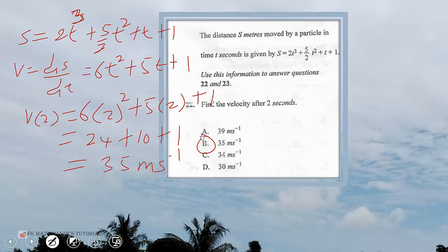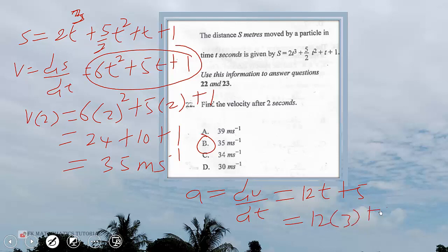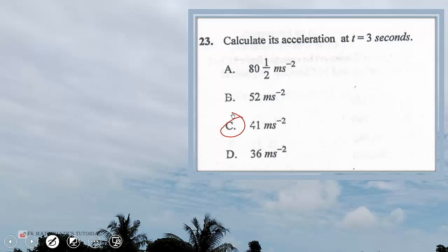Question 23: calculate the acceleration at t equals 3 seconds. For acceleration we differentiate velocity again. Acceleration equals dv/dt, which equals 12t plus 5. Plugging in t equals 3: 12 times 3 plus 5 gives us 41 meters per second squared. The correct answer is option C.